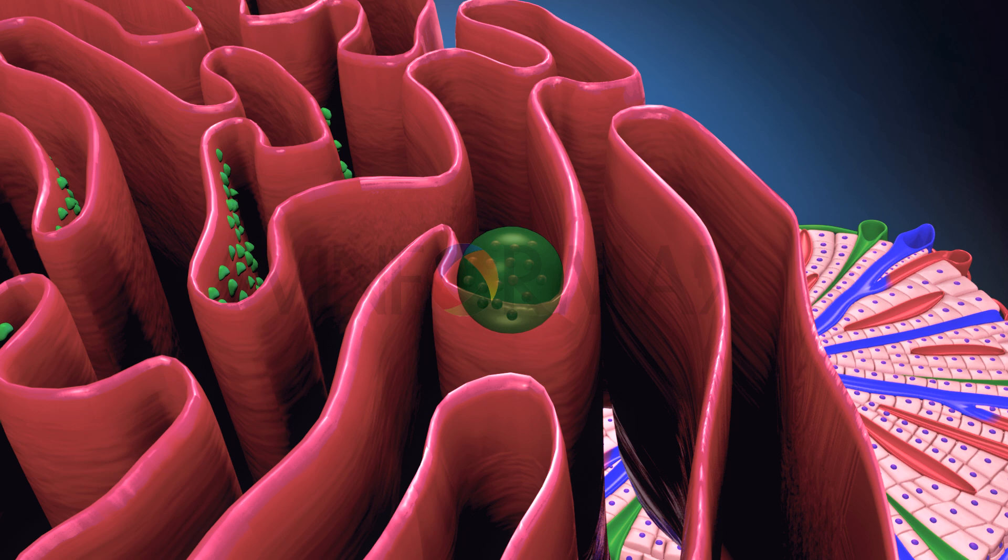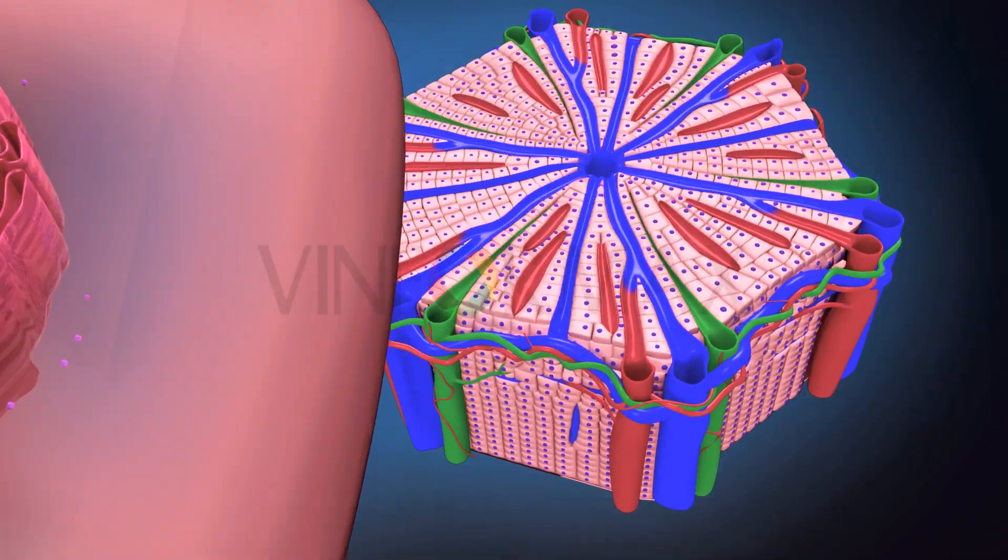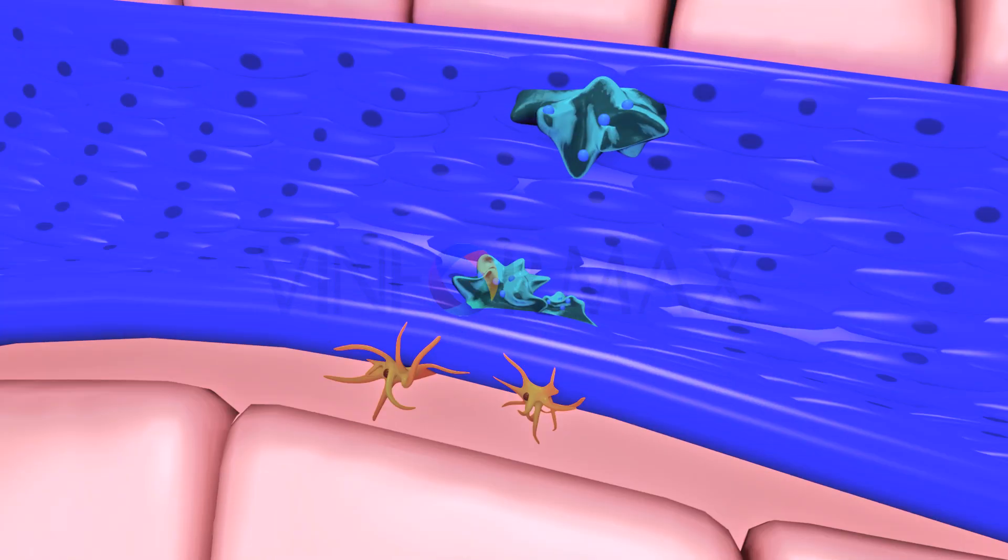In addition to hepatocytes, which form more than 60 percent of the cellular population, the liver contains other cells like Ito cells, Kupffer cells, hepatic stem cells, lymphocytes, and connective tissue cells.